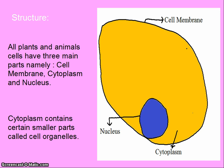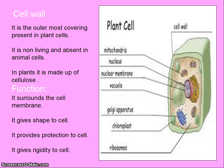Cell wall. Cell wall is the outermost covering present in plant cells. It is non-living and absent in animal cells. In plants it is made up of cellulose. The functions of the cell wall are: it surrounds the cell membrane, it gives shape to a cell, it provides protection to cells, and it gives rigidity to cells.